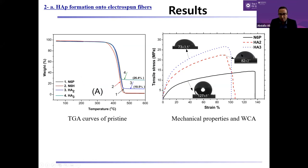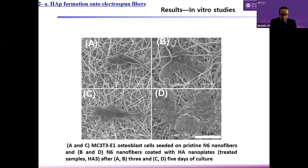The hydroxyapatite treatment enhances mechanical properties — increasing elastic modulus, ultimate tensile stress — though it decreases elongation, but the scaffold is still ductile and can be handled very easily. It also enhances surface wettability. Cell culture showed osteoblastic properties; we performed gene expression studies, ALP activities, and showed that hydroxyapatite on the surface definitely enhances biomineralization.